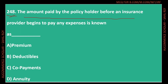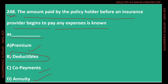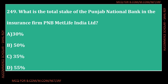Question number 248: The amount paid by the policyholder before an insurance provider begins to pay any expenses is known as? Options: Option A - Premium, Option B - Deductibles, Option C - Co-payments, Option D - Annuity. The correct answer is Option B - Deductibles. The amount paid by a policyholder before an insurance provider begins to pay any expenses is known as deductibles; these amounts are later deducted from the claim.